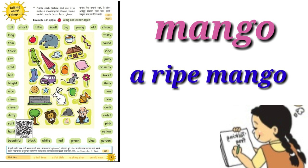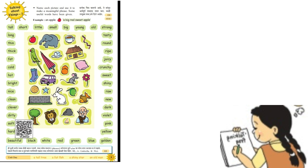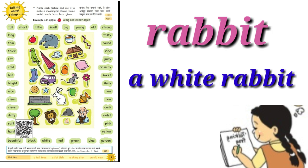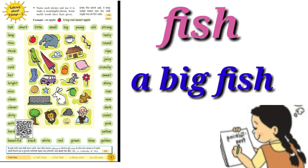Mango — a ripe mango. Wall — a small wall. Rabbit — a white rabbit. Fish — a big fish.